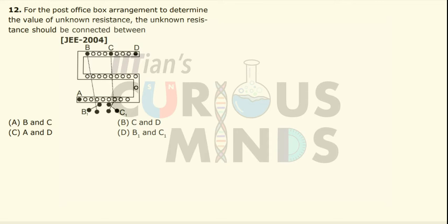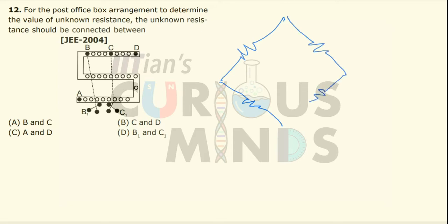The post box arrangement works on the Wheatstone network. We have certain fixed values and a certain variable. Let me draw a Wheatstone network — it consists of some known and unknown resistances.